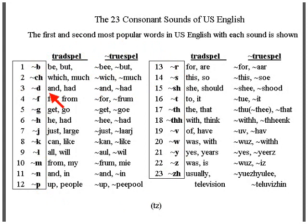The D sound, as in 'and' and 'had.' Sometimes in English, in quick speaking, the D is dropped — 'one and one' becomes 'one an' one.'